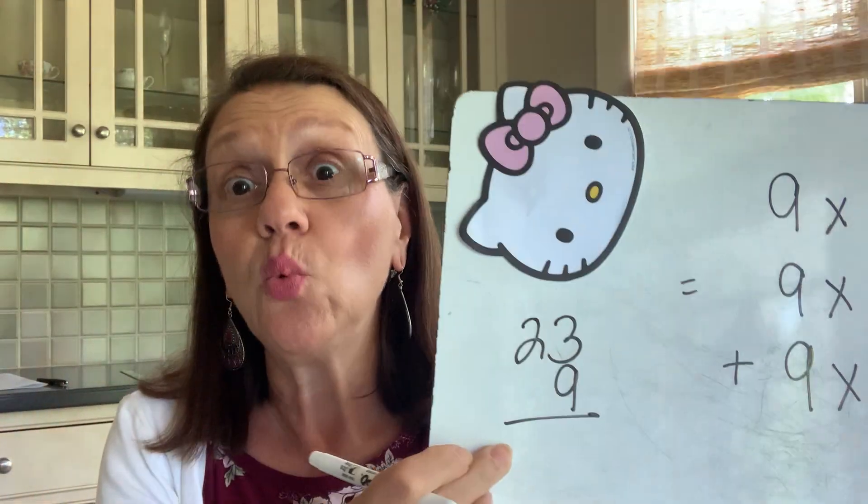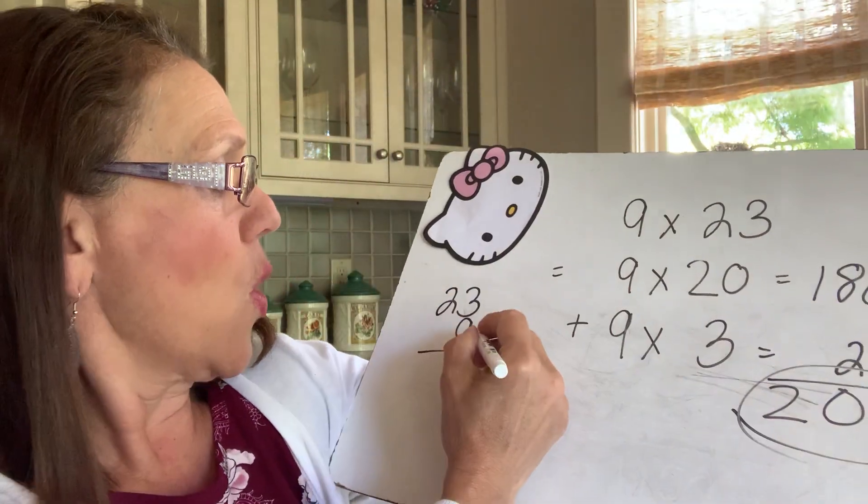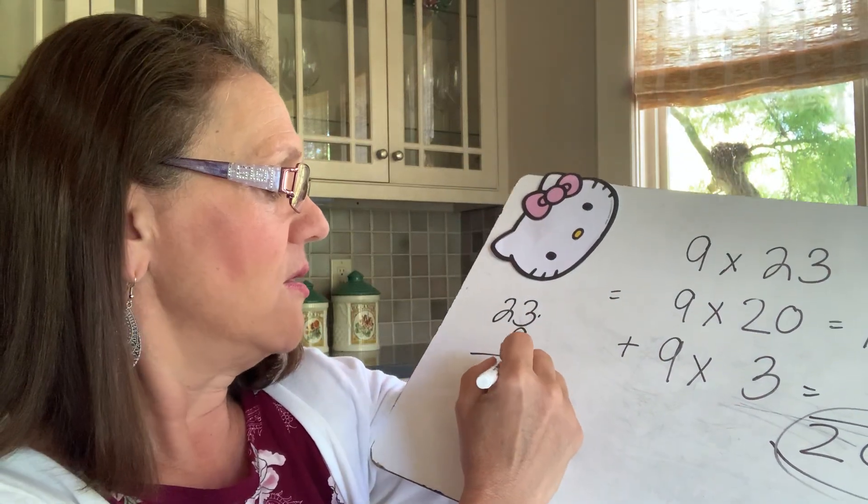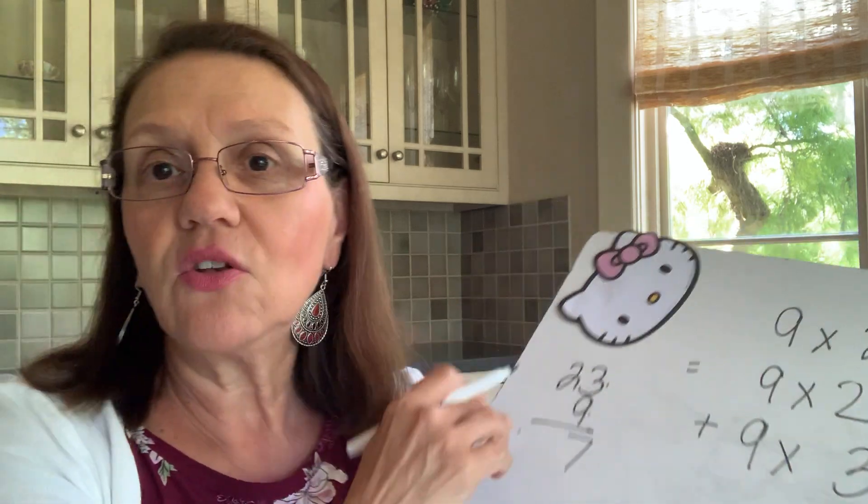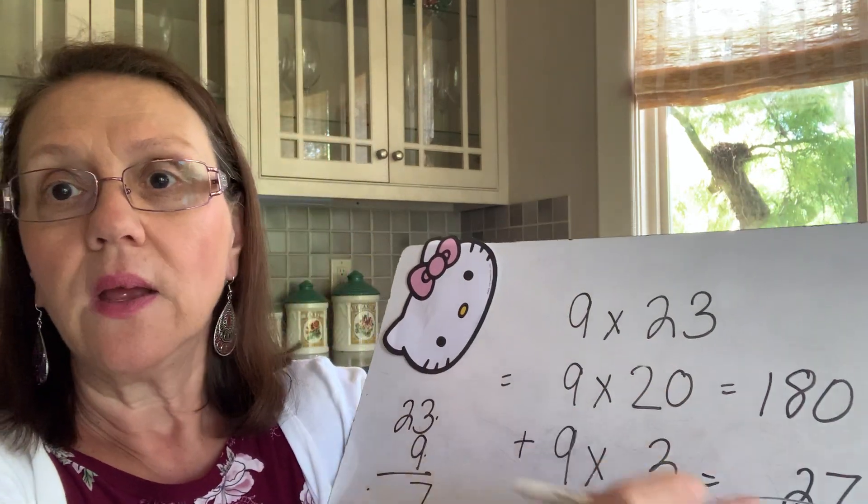I think what they mean by finding the product mentally is don't do your long algorithm — like 23 times 9, nine times three is 27 carry the two — don't do all that. They want you to do it this way. That will get your mind into the method of calculating this. When you do a lot of these, you will be able to do them in your head very quickly and easily. So for today, I would like you to show me the steps of your mental calculation. I know that sounds weird, but that's what I think those instructions mean.